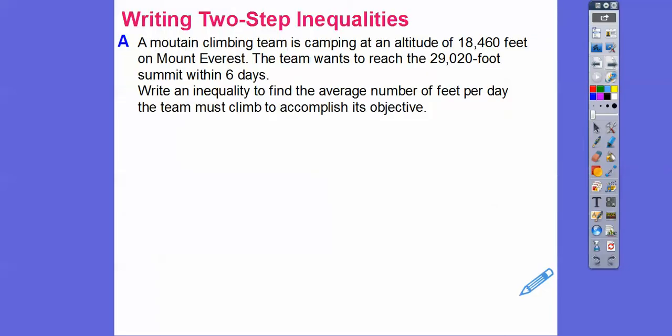All right, so here we're going to write two-step inequality. A mountain climbing team is camping at an altitude of 18,460 feet on Mount Everest. The team wants to reach 29,020 foot summit within six days. Write an inequality to find the average number of feet per day the team must climb to accomplish its objective. Well, remember, they started out, we're starting at the 18,460. So that's the starting altitude.